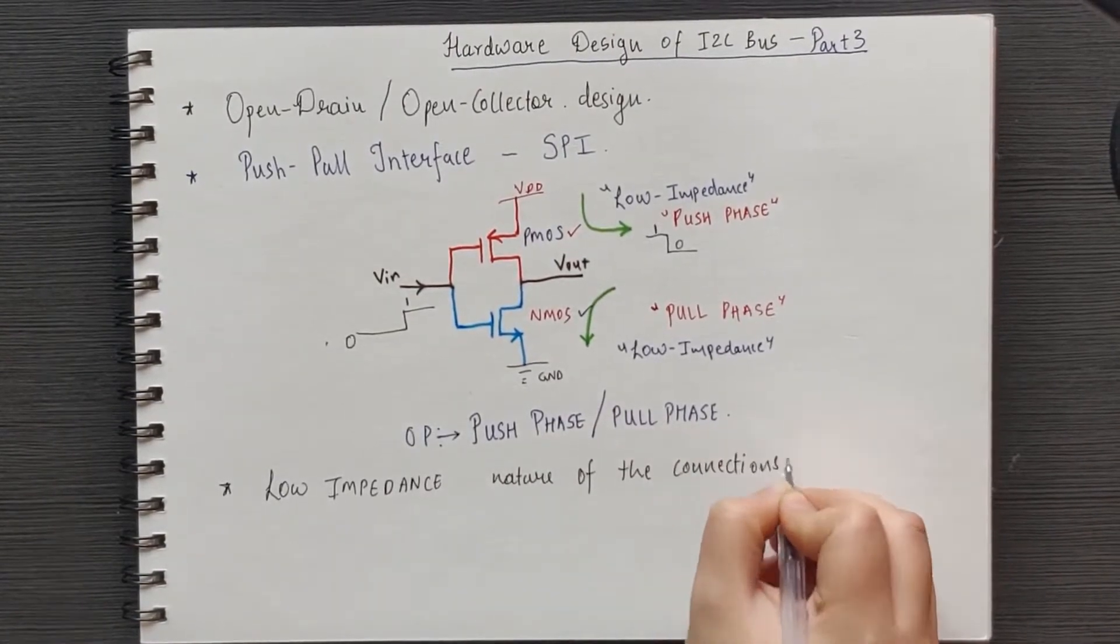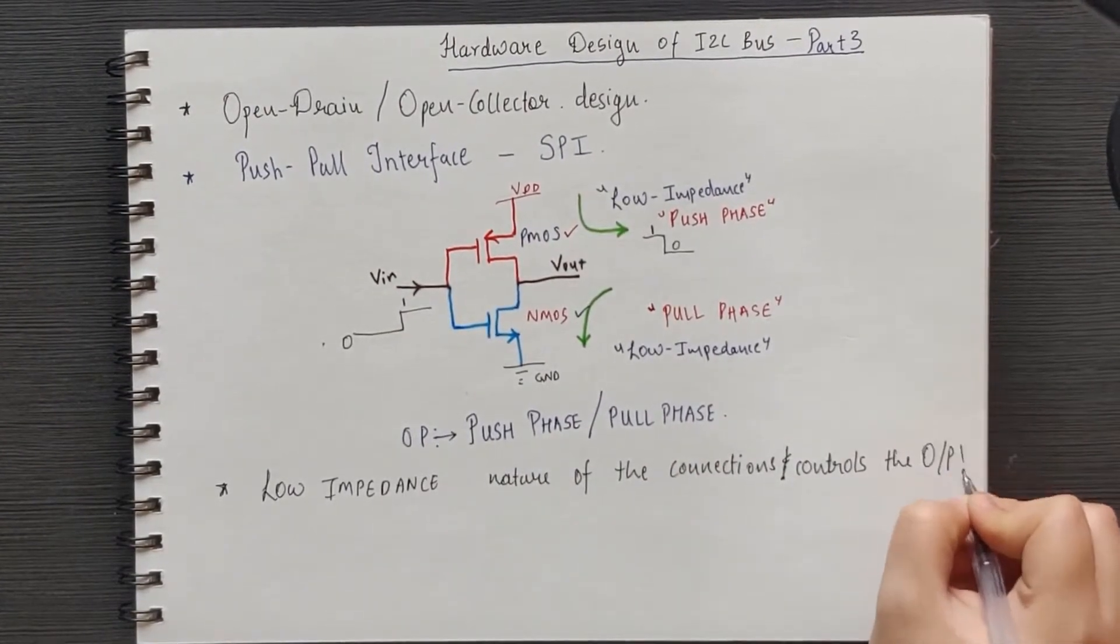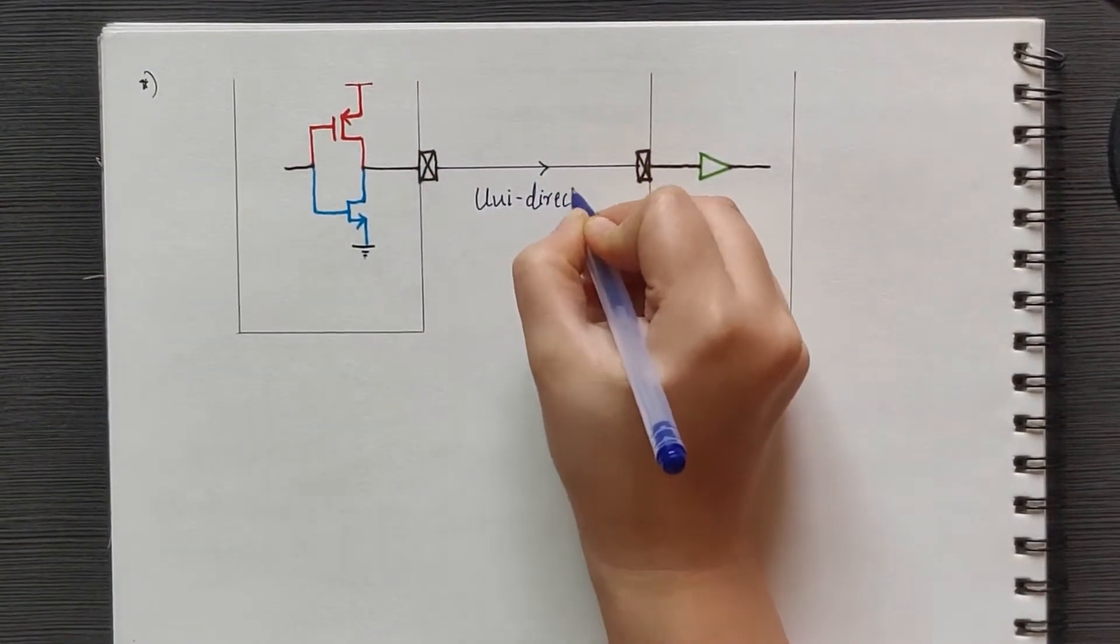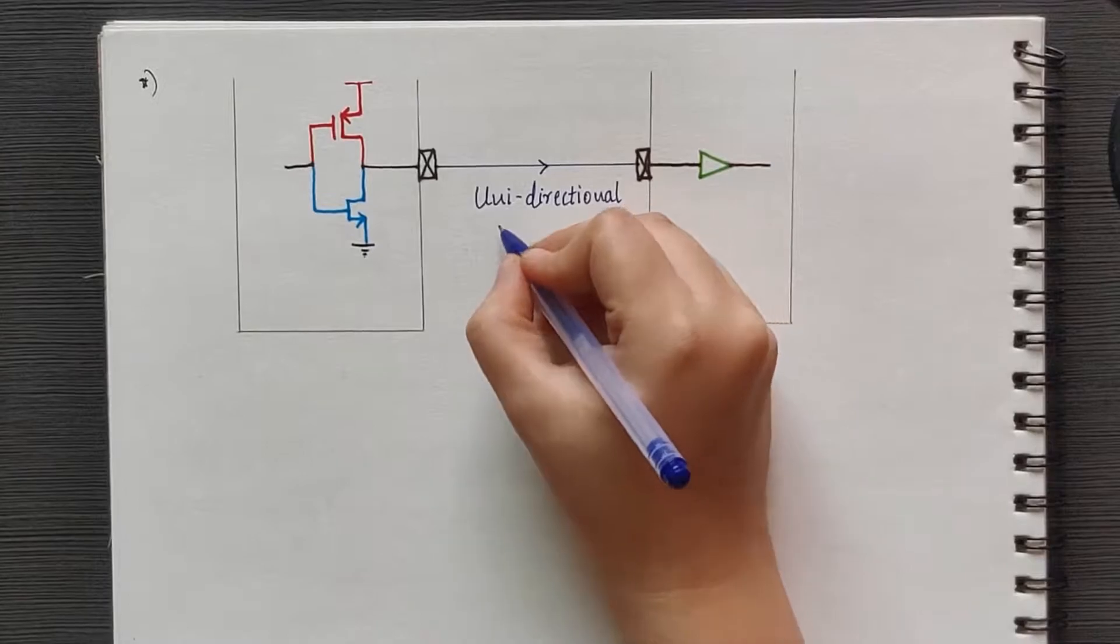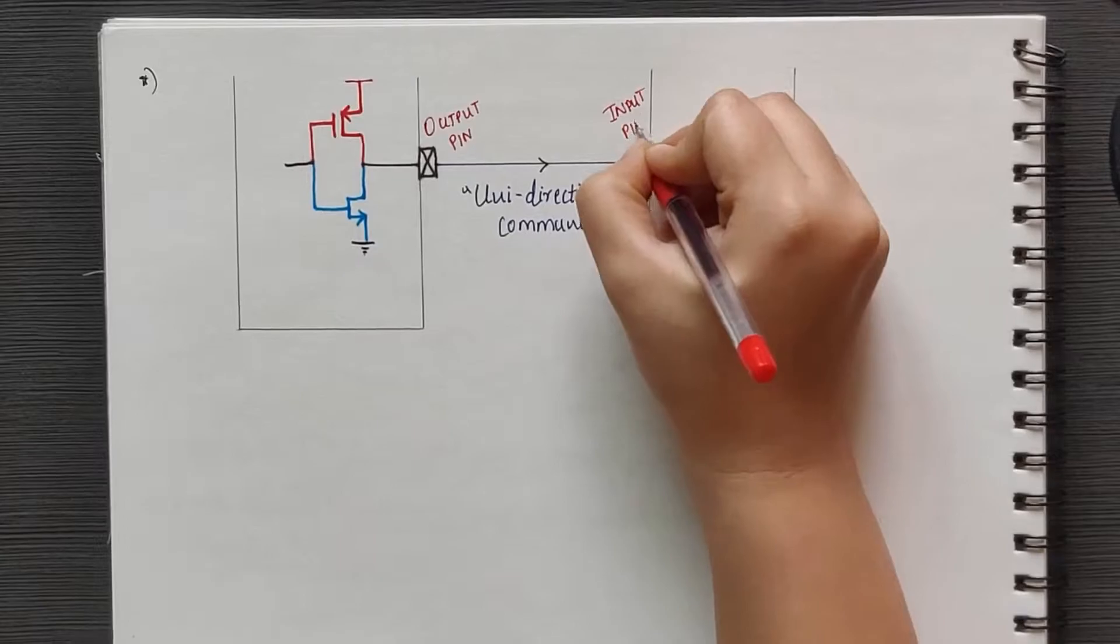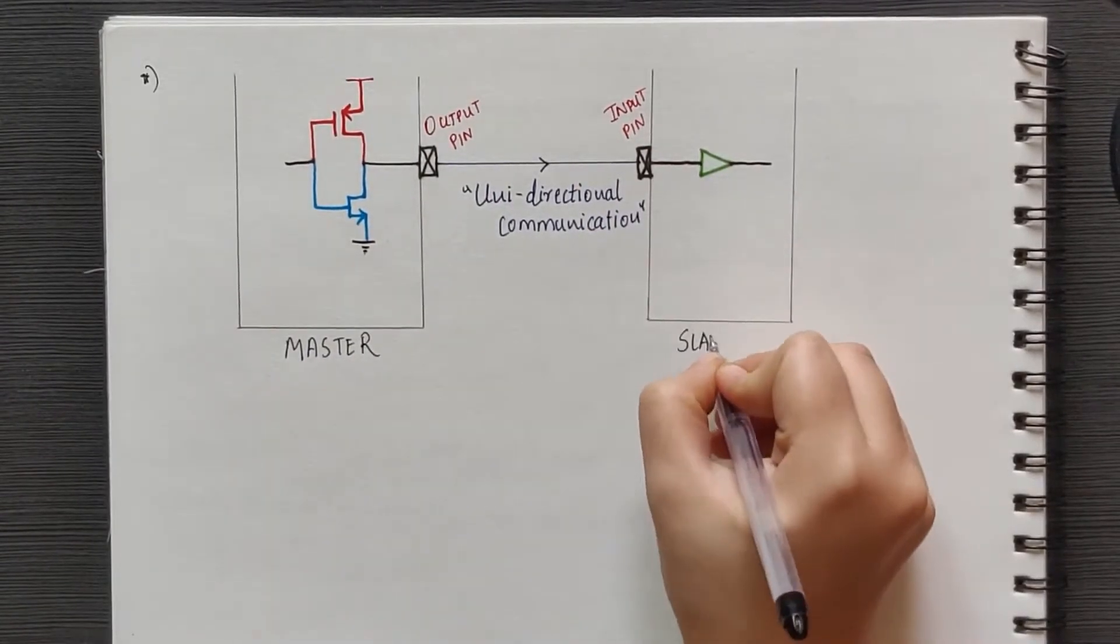Remember that the low impedance nature of the connections controls the output. This configuration is commonly used in interfaces that have unidirectional communication or wherein the data is flowing only in one direction, like in case of SPI, UART, etc.